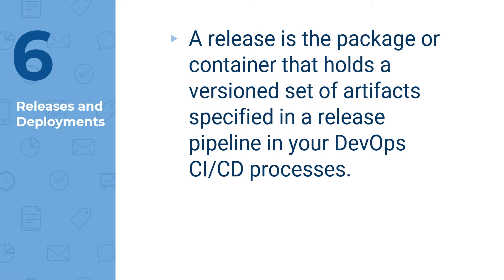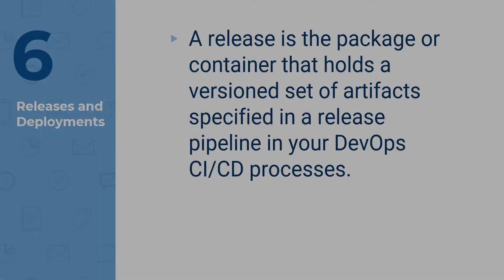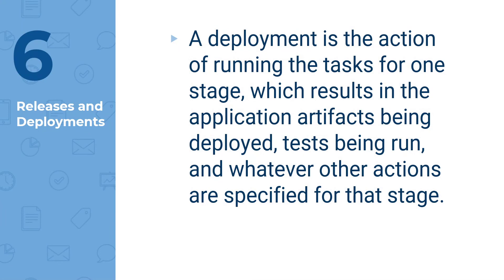There can be multiple releases from one release pipeline or release process. The deployment is the action of running the tasks for one stage, which results in the tested and deployed application and the other additional activities that are specific for the stage. Initiating a release starts each deployment based on the settings and policies defined in the original release pipeline. There can be multiple deployments of each release for one stage. When a deployment of a release fails for a stage, you can redeploy the same release onto that stage.